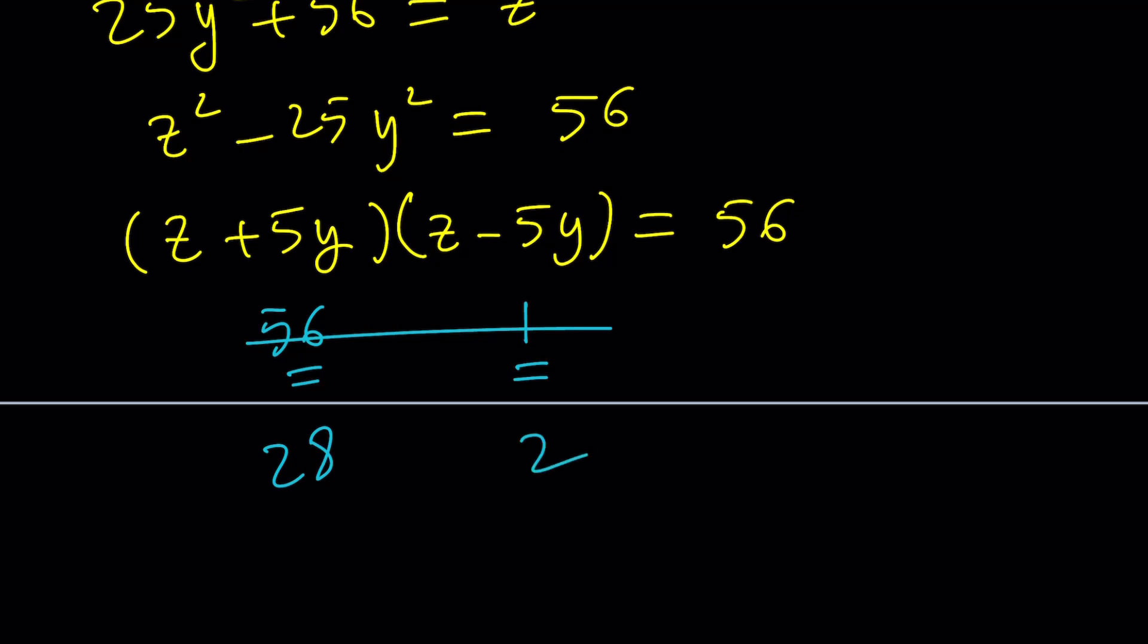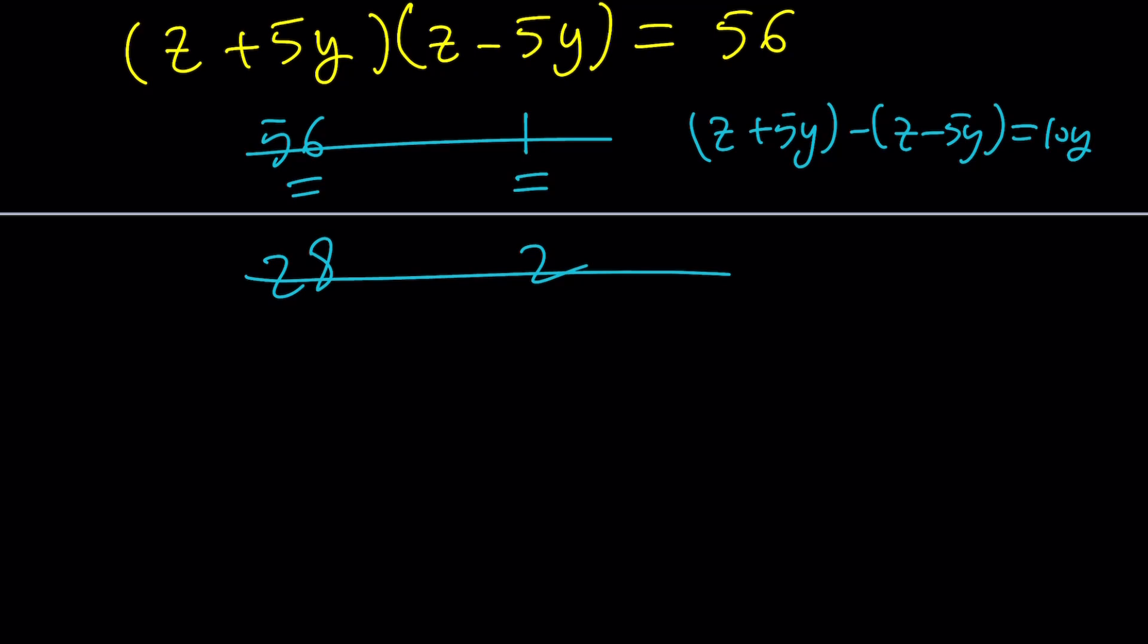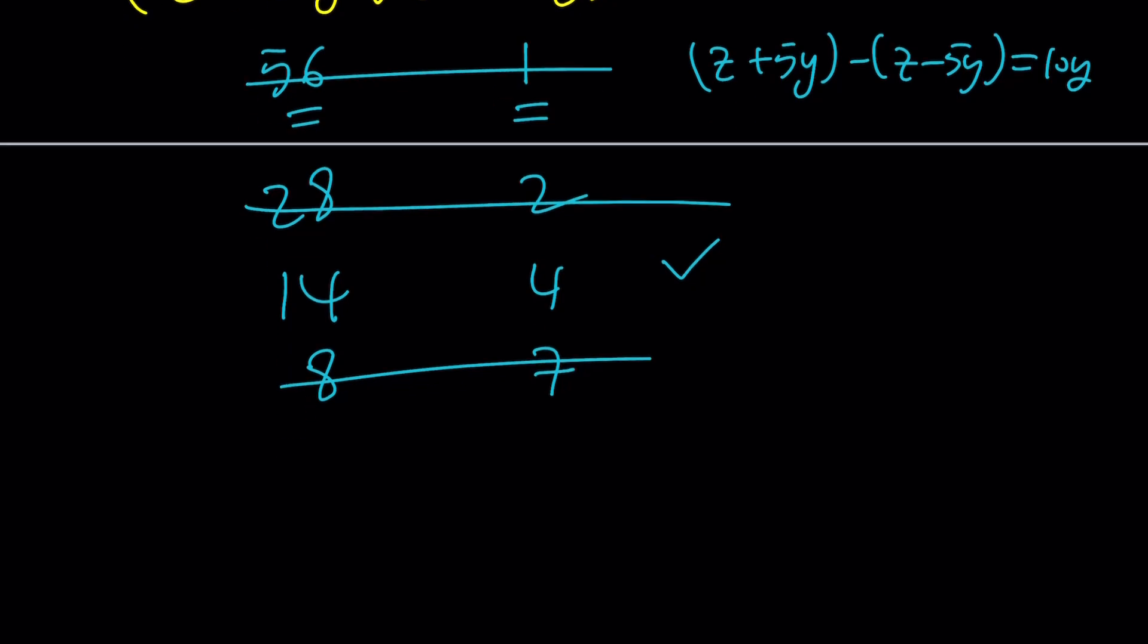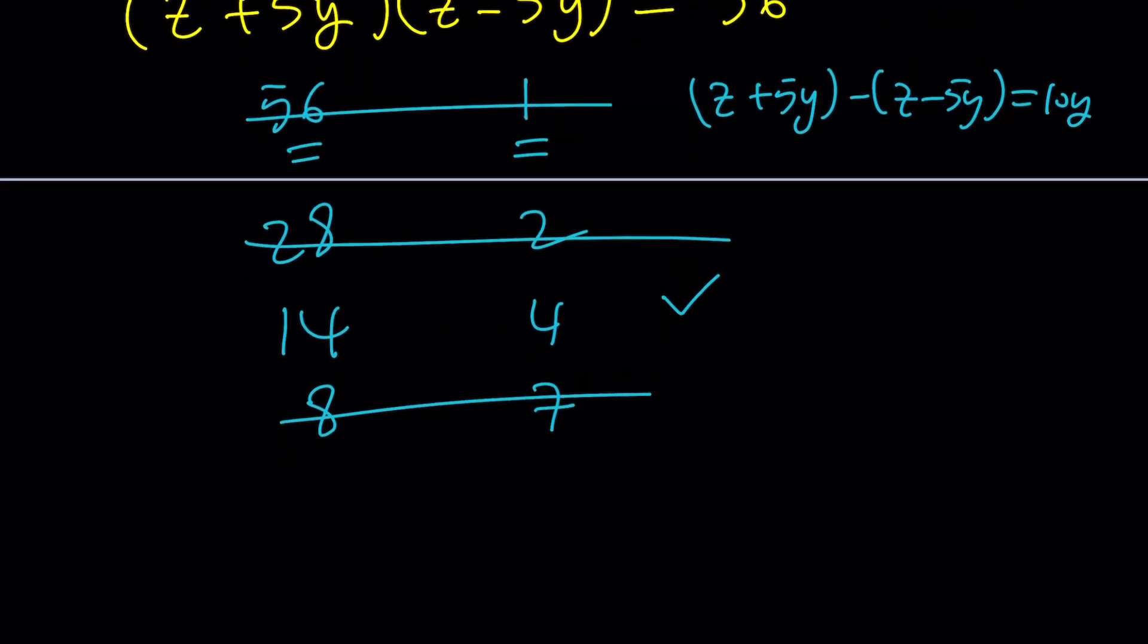There's not going to be that many that satisfy. Let's go ahead and see. Let's use 28 and 2. Their sum is even. That's good. How about the difference? If you look at their difference, it's not a multiple of 10. What I mean by that is if you subtract z + 5y and z - 5y, that gives you 10y. So 28 - 2 must be 10y, but that's not the case. How about 14 and 4? Their sum is even. Their difference is a multiple of 10, so it works. Let's go ahead and pick the good ones first. And the next one is going to be 8 and 7, their sum is not even, so it's not going to work. In other words, either both factors must be odd or both must be even. But 56 doesn't have two odd factors, so we basically need to pick even times even.